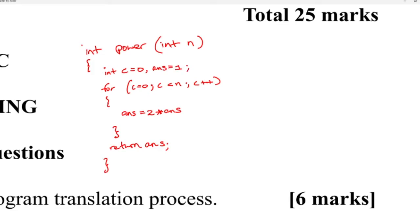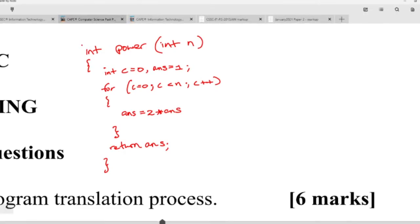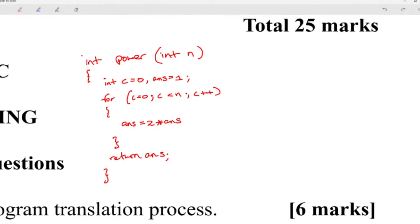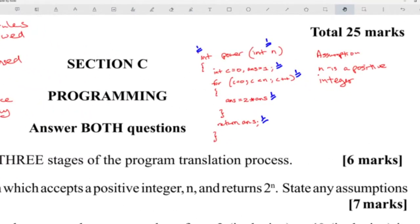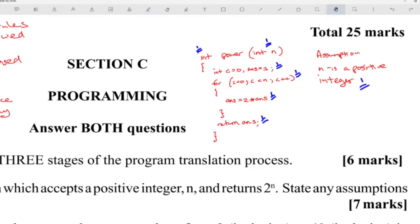There's another way by counting the loop down using c minus minus, starting from c equals n until c equals one — same result. Any assumption made: n is a positive integer. There are multiple ways to solve this, but examiners look for the key components: iterate, create variables, implement a process, and return a value — since it's a function with an integer return type.